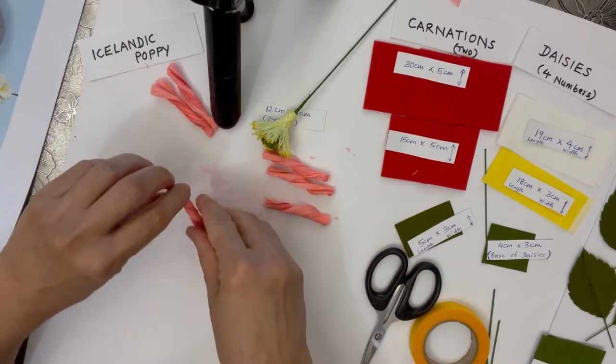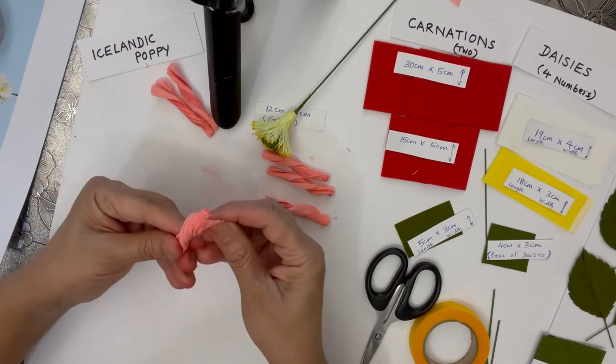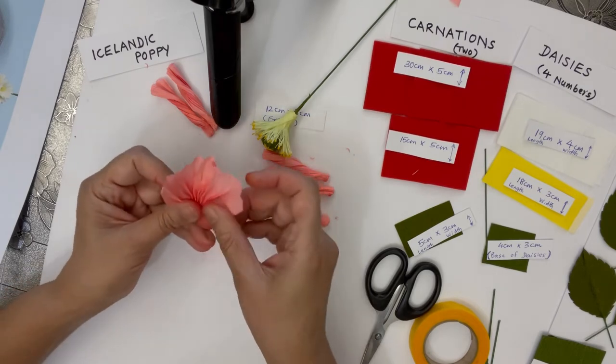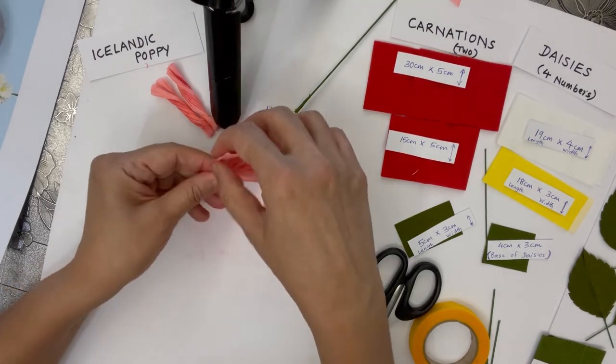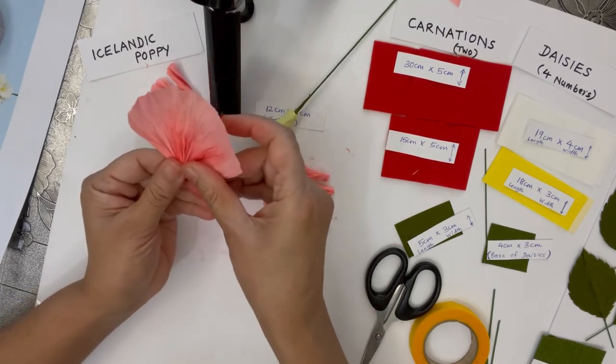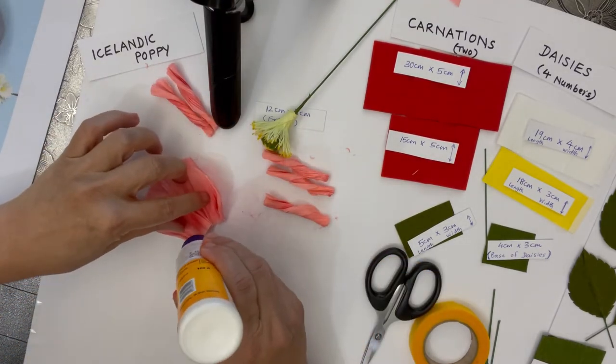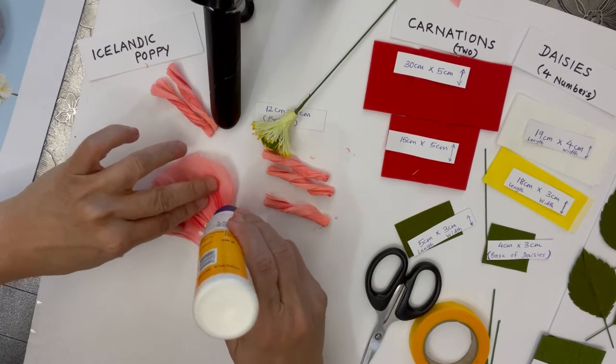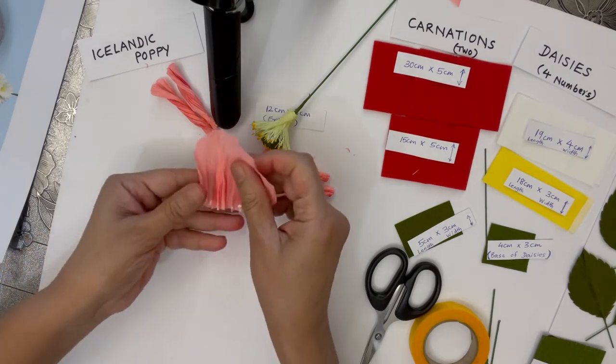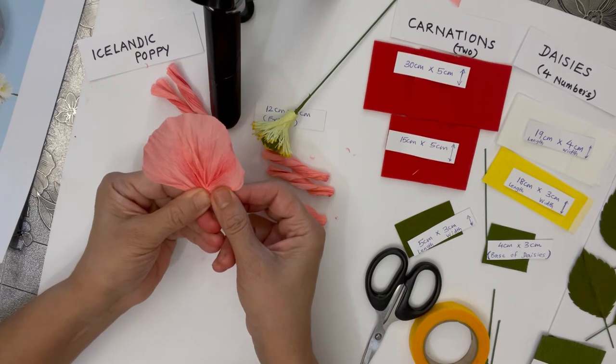Once you've done with all the petals, you have to open it up. You have to see that the curved part should be at the top. On the straight edge, just put a little bit of glue and then press it together to make a fan-shaped petal.